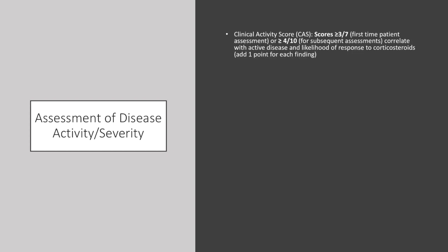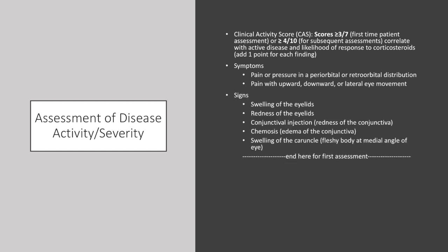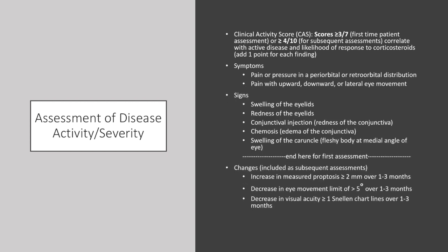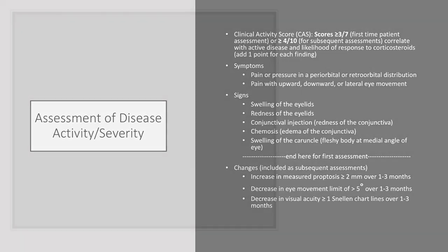With so many possible symptoms, and the sometimes waxing and waning course of this disease, an objective measure of disease activity is commonly assessed using a clinical activity score. First-time patients are assessed on 7 possible findings, and subsequent assessments add an additional 3. Scores greater than or equal to 3 out of 7 for first-time patients, or greater than or equal to 4 out of 10 for subsequent assessments, correlate with active disease and likelihood of response to immunomodulatory therapies, such as corticosteroids.